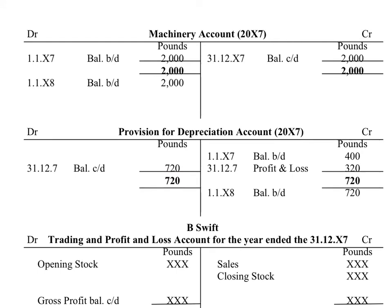If we look into the second year, using the reducing balance method means you will have a reduced amount of depreciation each year. The first thing to note is that the asset — the machine — was originally paid for using cash, so at the beginning of the year you had a balance on your machinery account of £2,000. That's the value of the machines in your business, and that hasn't changed at the end of 2007. So you have a balance carried down and brought down of £2,000.